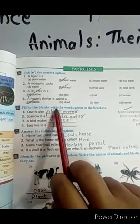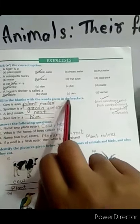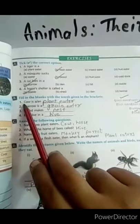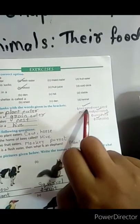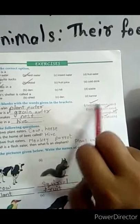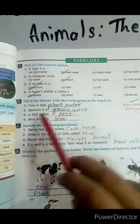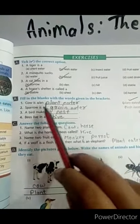Part B: Fill in the blanks with the words given in the brackets. A cow is a plant eater or insect eater. The answer is plant eater. A cow is a plant eater.